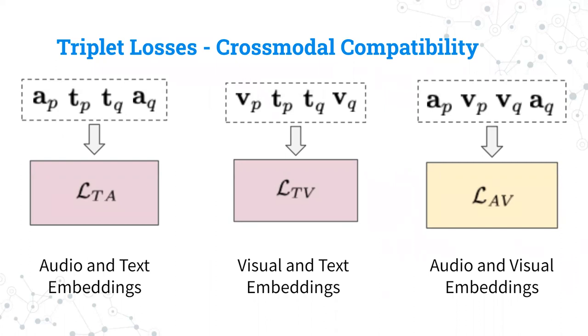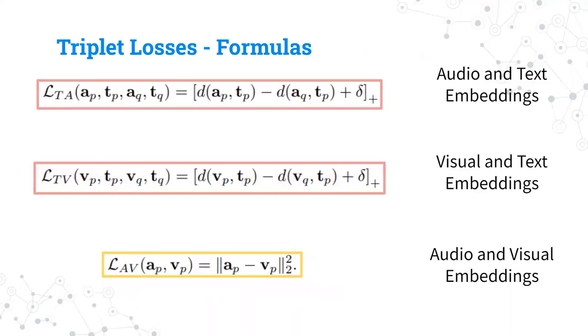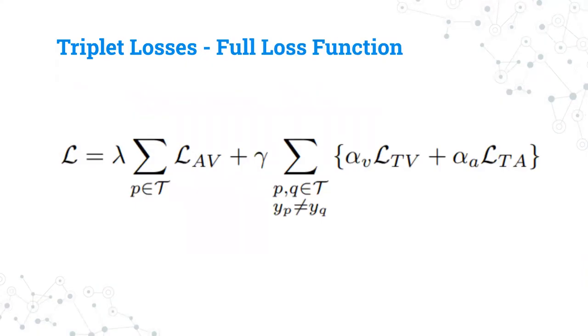The yellow loss is to ensure that the cross-modal similarities between the audio and visual video is in the common embedding space. As mentioned before, the two red losses control the class constraints of the project. They do so by forcing the two embeddings closer to each other by a factor of delta, which is the incorrect class embeddings. The yellow formula is to ensure the cross-modality similarity between the audio-visual streams that come from the same video in the common embedding space, as the paper states. The full loss function for the project is a simple weighted average of the three losses. The formula is shown here.